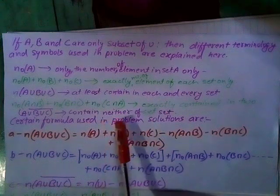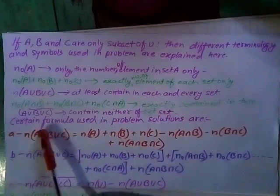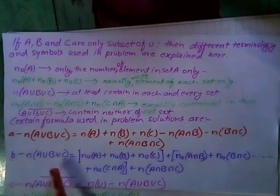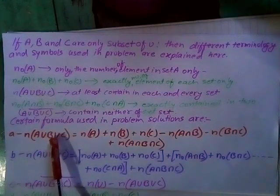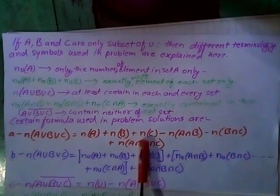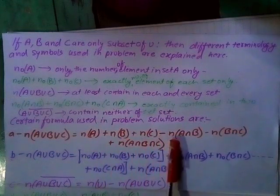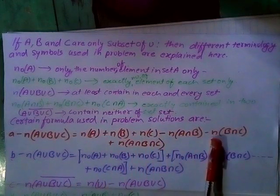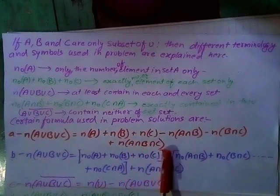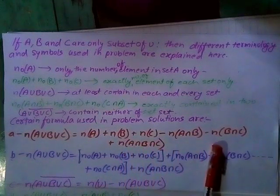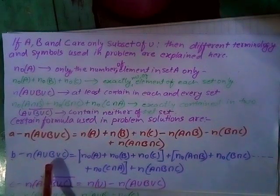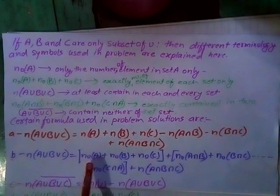A union B union C complement contains neither of these sets. The main formula used in problem solutions: N A union B union C equals N A plus N B plus N C minus N A intersection B minus N B intersection C minus N C intersection A plus N A intersection B intersection C.